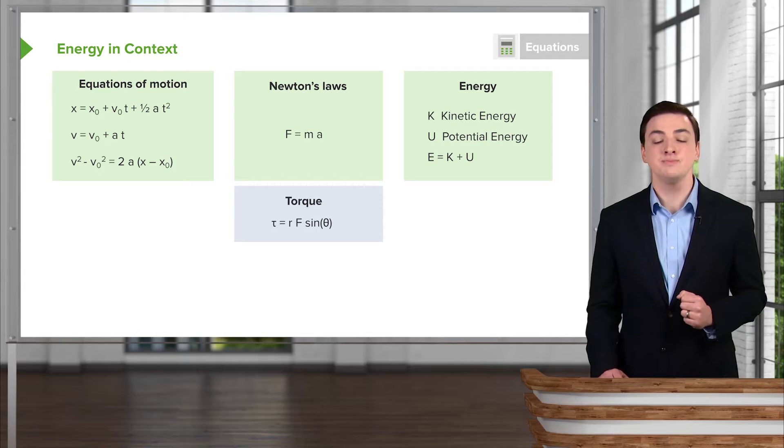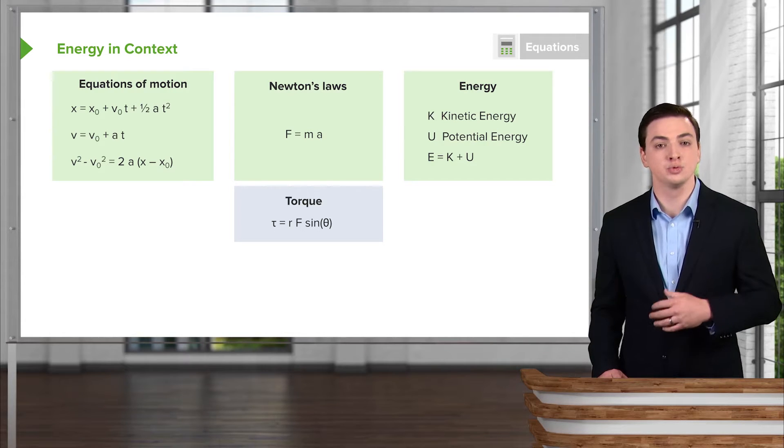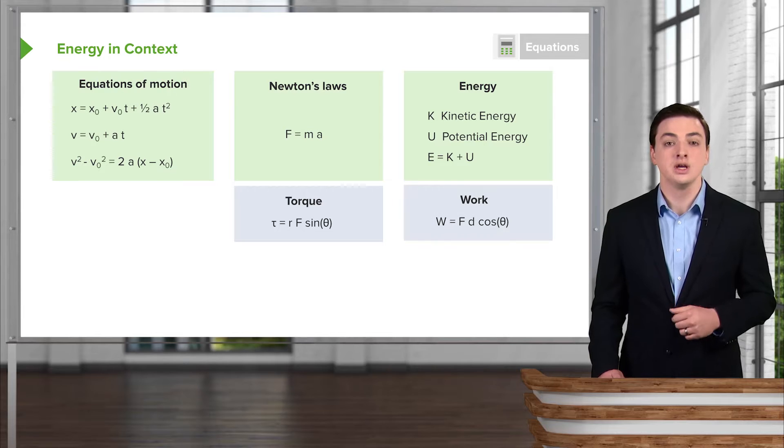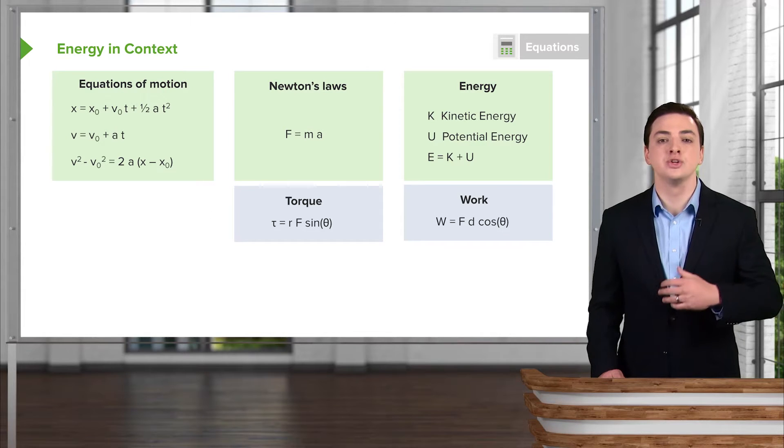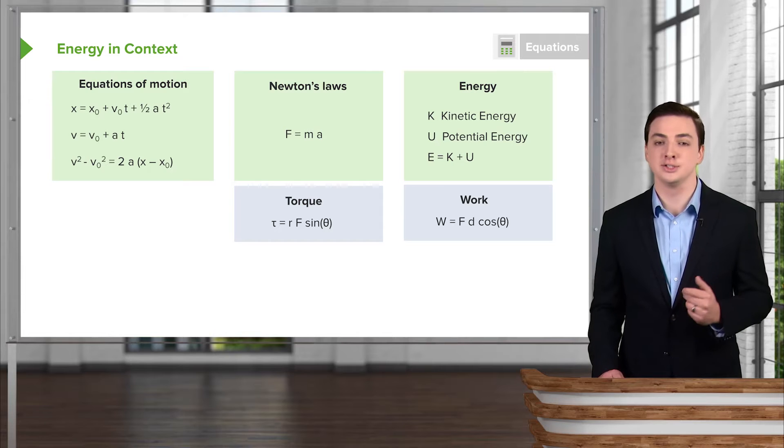Now we're going to discuss energy, a few different types, kinetic and potential, and then the total energy for an object, which will be the sum of these two. After we've done this, we'll discuss work, which is a way of measuring how energy changes in this equation for work. We'll go over a little bit later.